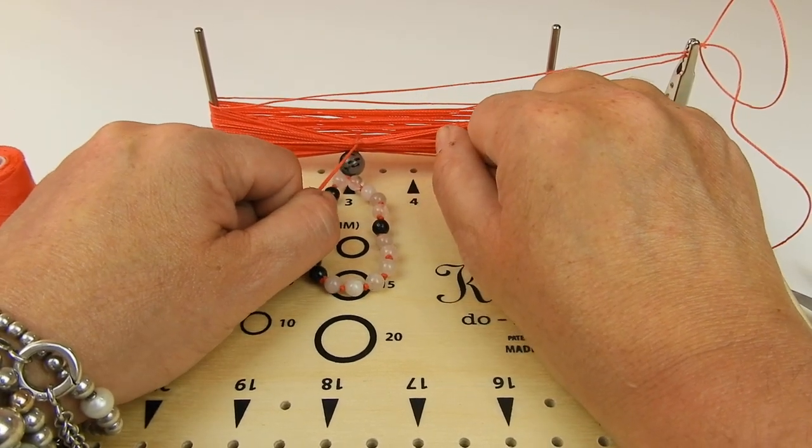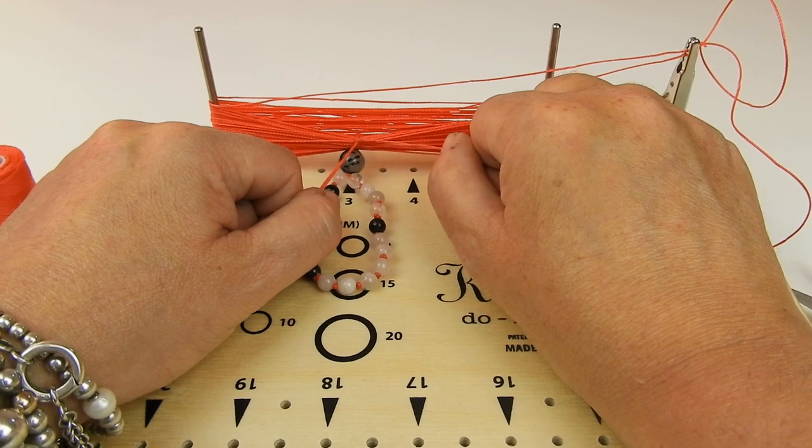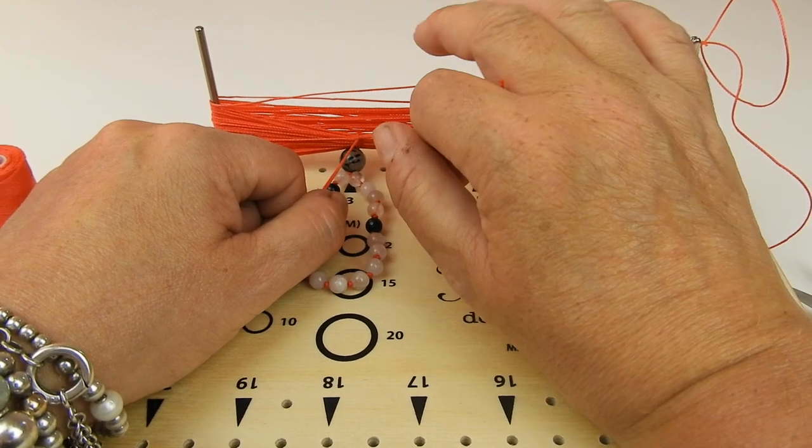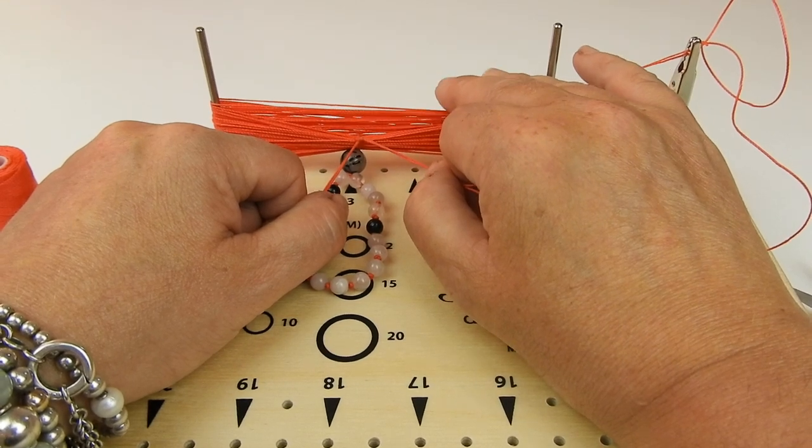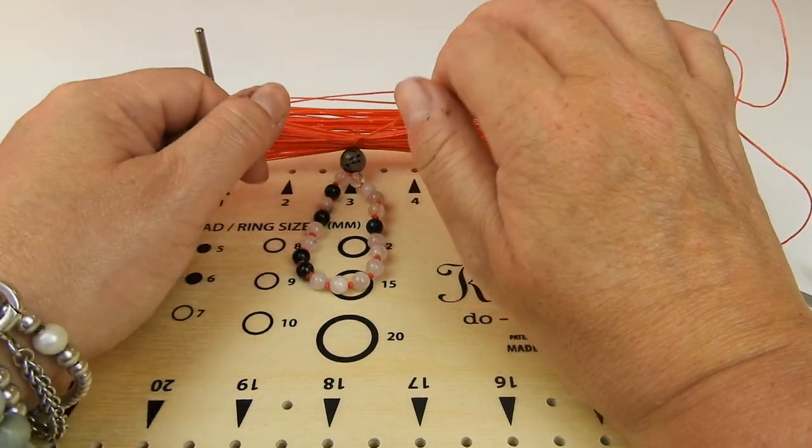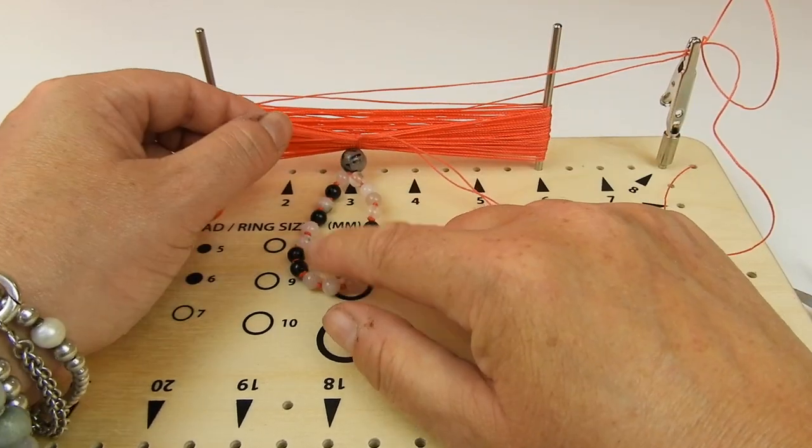If you want to make doubly sure, you can pop a little bit of glue on there as well. I wouldn't use any kind of super glues though. I would use a glue suitable for fabrics or like a jeweler's glue, something like Hypo Cement or E6000 would be perfect.